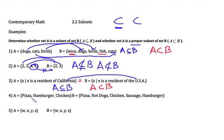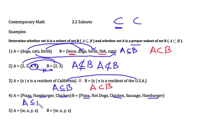In our next example, we have some dinner choices. Set A is pizza, hamburger, and chicken. Set B has pizza, hot dogs, chicken, sausage, and hamburger. Every element in A — pizza, hamburger, chicken — is also in B, so A is a subset. The two sets are not equal since B has hot dogs and sausage. Since they're a subset that are not equal, we have a proper subset.